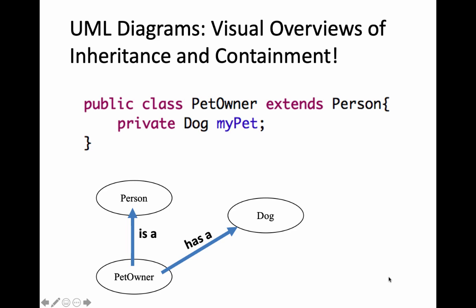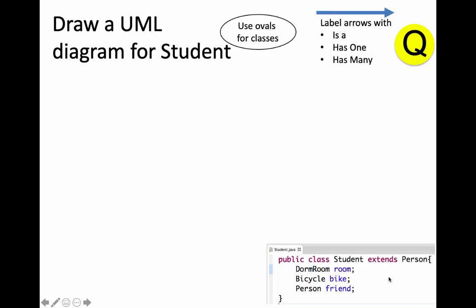This relies on our knowledge of inheritance and object-oriented programming in general. I've got a class PetOwner that extends Person, so a PetOwner is a Person — any functionality a Person has, a PetOwner will also have. A PetOwner also has a Dog object as an instance variable. You can see these represented below: a PetOwner is a Person, and a PetOwner has a Dog. It's a little absurd that the only pet you can have is a dog, but we're just focusing on the UML.